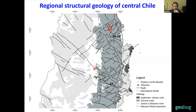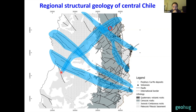The fault system we were looking at before is part of a very large-scale northeast-trending fault system which can be followed from the main cordillera into the coastal cordillera to the southwest. Something similar happens with some of the northwest-striking fault systems recognized in the main cordillera, which can be directly correlated with fault systems recognized in the older rocks of the coastal cordillera.